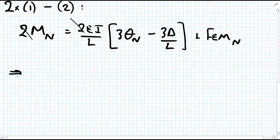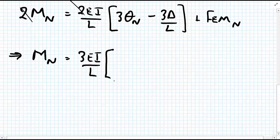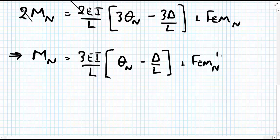Let's tidy that up slightly. We get the moment at the near end equal to—and we'll take these threes outside—so 3EI divided by L times [θ_N - Δ/L], the chord rotation, plus the fixed end moment at the near end. The fixed end moment changes because we don't have fixed end moments at both ends, so the value gets relaxed a little bit. What this means is we'll require modified fixed end moments.